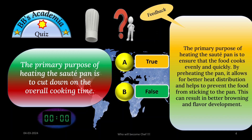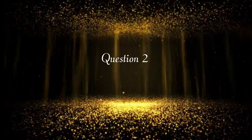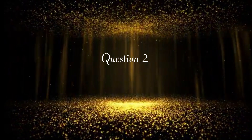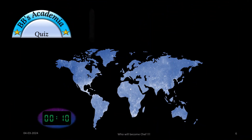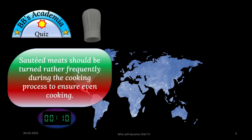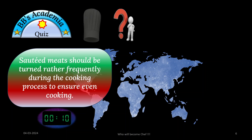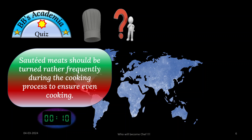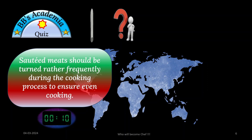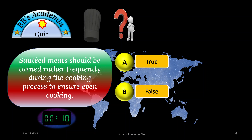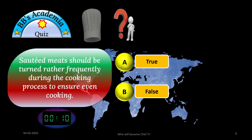Question number 2 is: sautéed meat should be turned rather frequently during the cooking process to ensure even cooking. Again, here are two options for you — either the statement is true or false — and you have to identify the right option for this statement. Time allotted: 10 seconds, and your time begins now.